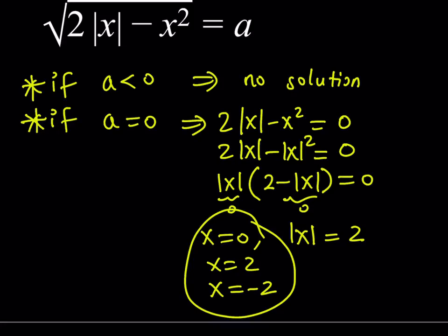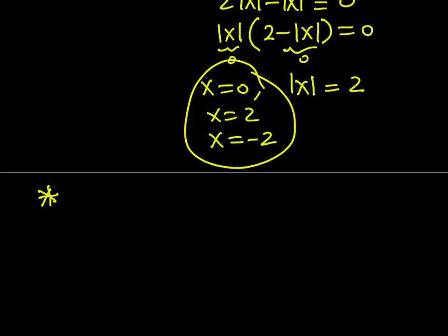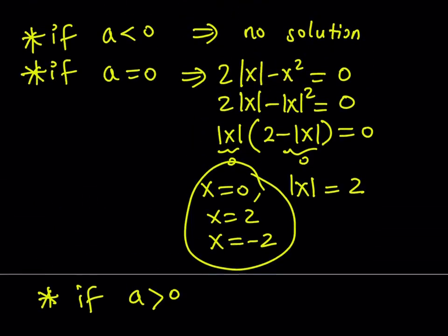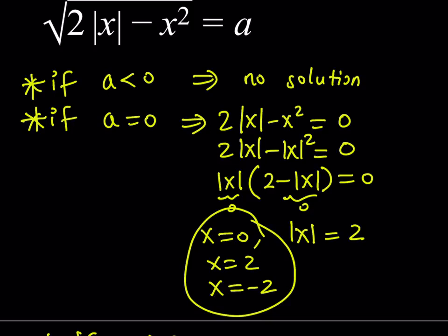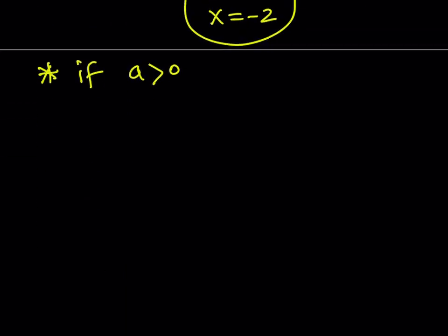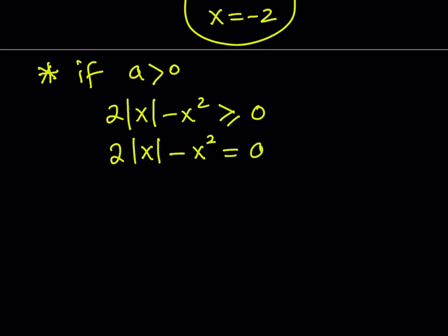Now let's consider when a is greater than zero. We'll have a valid equation because the radical will be positive. I can square both sides, but first I need whatever is inside the radical to be greater than or equal to zero. So two times the absolute value of x minus x squared must be greater than or equal to zero. Squaring both sides gives that expression equal to a squared.